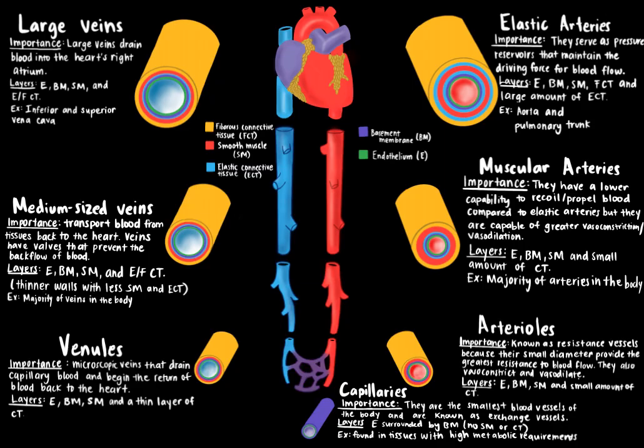Before we jump into hemodynamics, it is important to identify and characterize the seven types of blood vessels. It's important to take into account the vessel type when discussing hemodynamics because certain vessel types have specific characteristics that can impact blood flow.